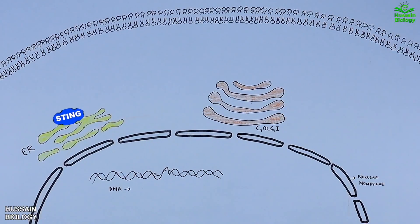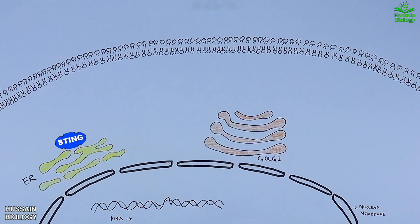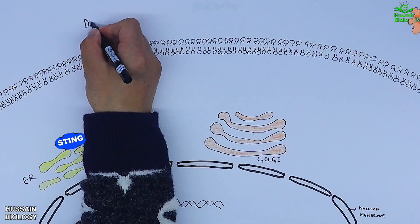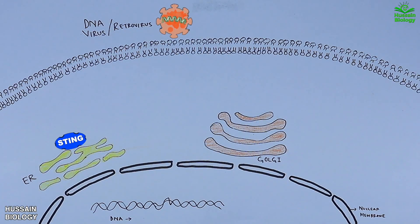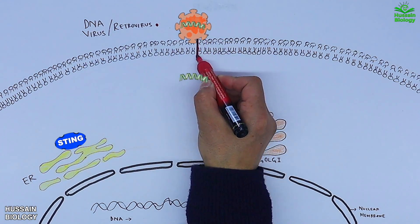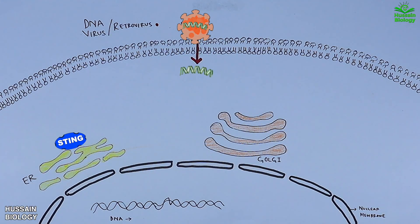Now to start the pathway, we have a DNA virus or retrovirus outside the host cell. This virus targets the host cell and injects DNA virus inside the cell as shown in the diagram.